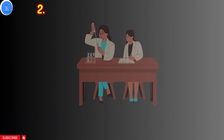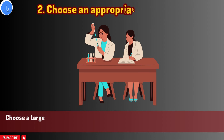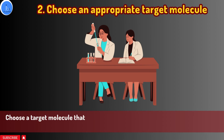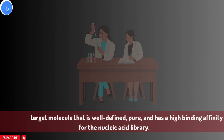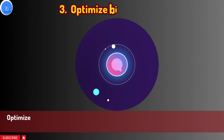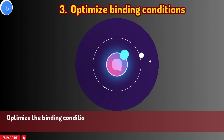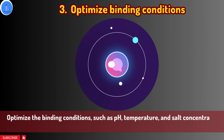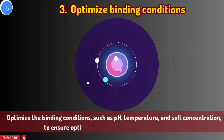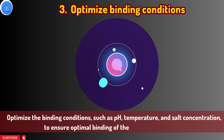Tip two: choose an appropriate target molecule. Choose a target molecule that is well defined and purified. Do an earlier analysis of that target molecule in terms of its structure, properties, and physicochemical properties — this will help you in designing your SELEX experiment. Tip three: optimize binding conditions. This is a very crucial step. Optimize the binding conditions such as pH, temperature, and salt concentration to ensure optimal binding of the library with the target.